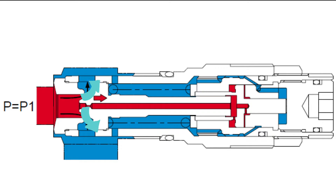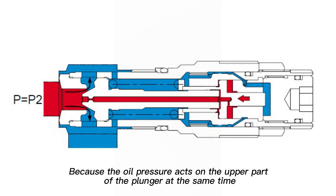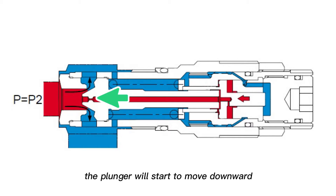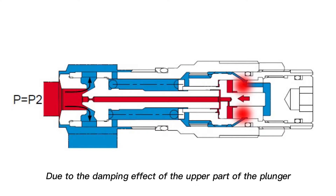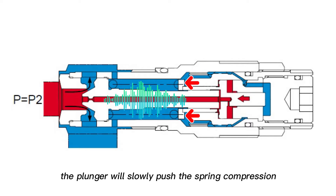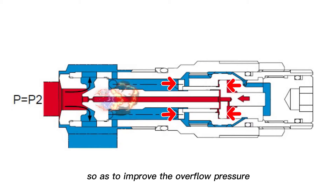At this point the overflow pressure is called P1. Because oil pressure acts on the upper part of the plunger at the same time, when the oil pressure is greater than the reaction force of the spring, the plunger will start to move downward. Due to the damping effect of the upper part of the plunger, the plunger will slowly push the spring compression so that the spring force and the oil pressure inside the relief valve increase at the same time, so as to improve the overflow pressure.